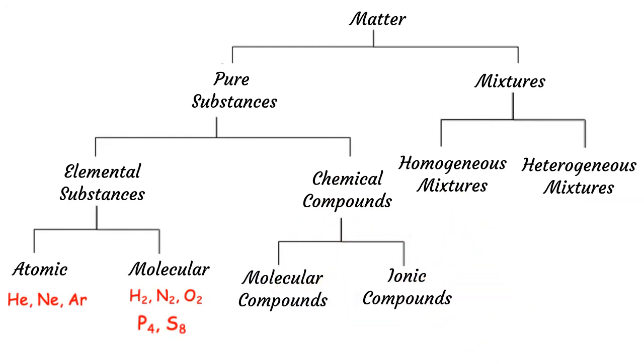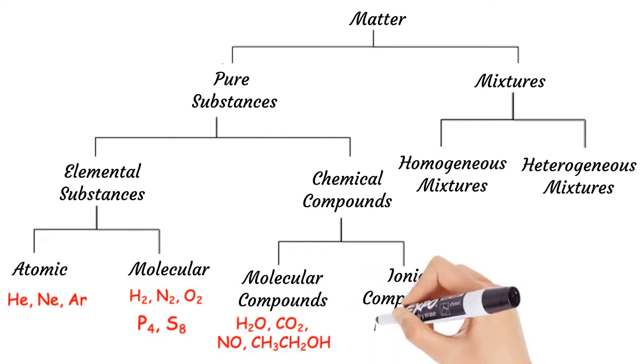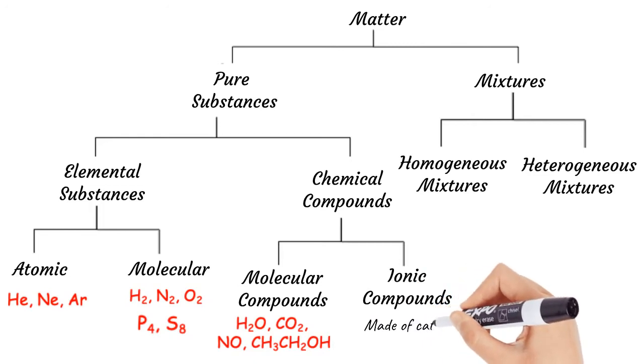Molecular compounds are also known as covalent compounds and are made of only non-metallic elements. Examples of covalent compounds are water, carbon dioxide, nitric oxide, ethanol, and so forth. On the other hand, ionic compounds are made of cations and anions.